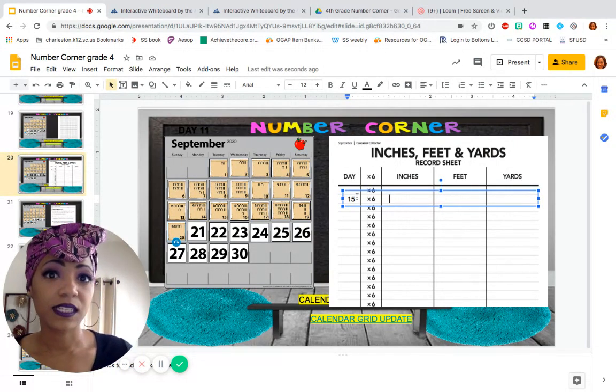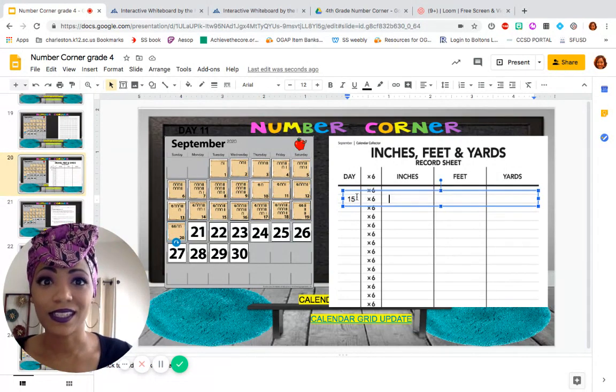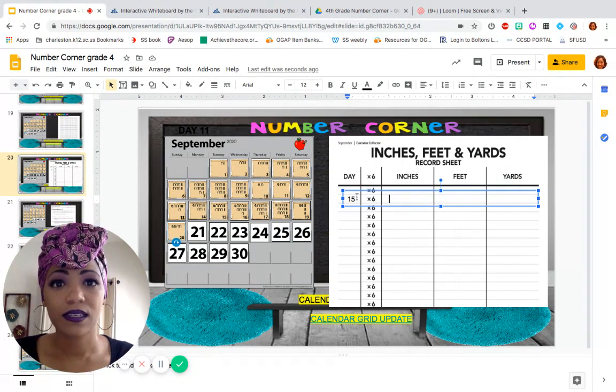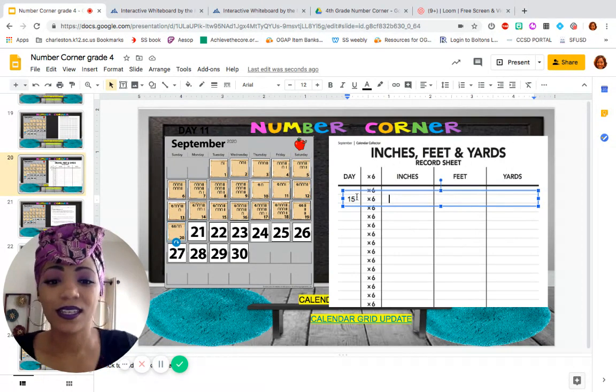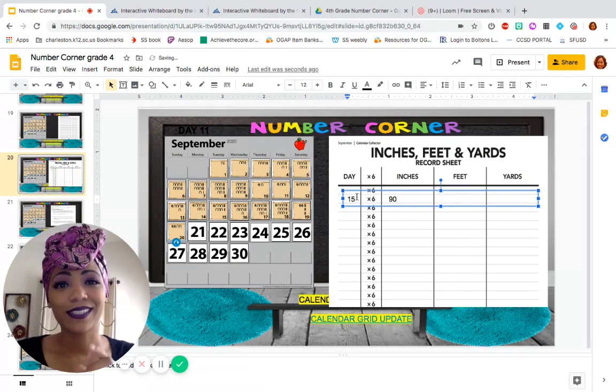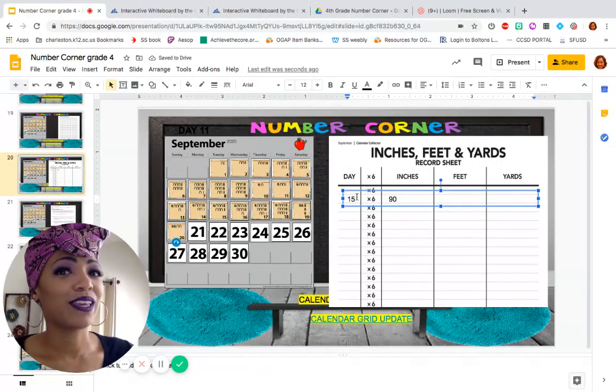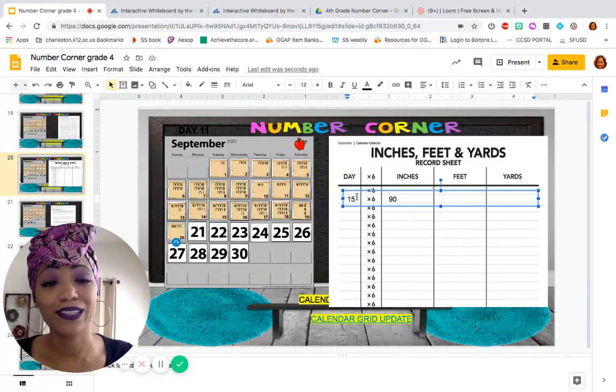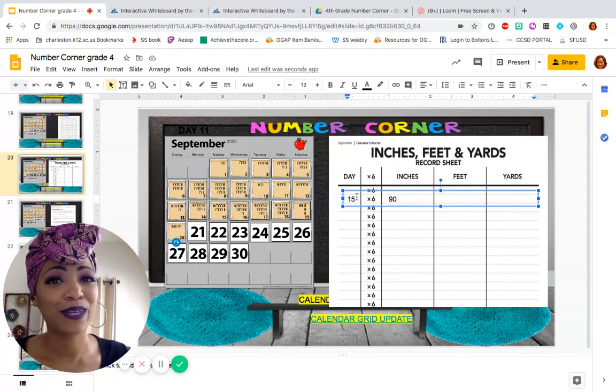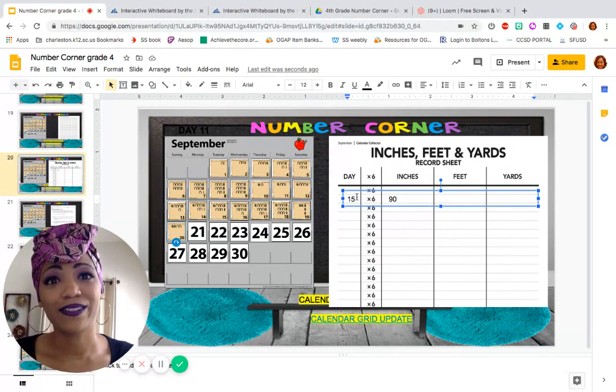Well, 10 times 6 is 60, and 5 times 6 is 30. So, 15 times 6 is 90 inches. Good. I bet if I showed you the other recording sheet, you would have been able to just add 6 inches to what we had yesterday. But, I wanted to make sure you really understood how to figure out the answer.